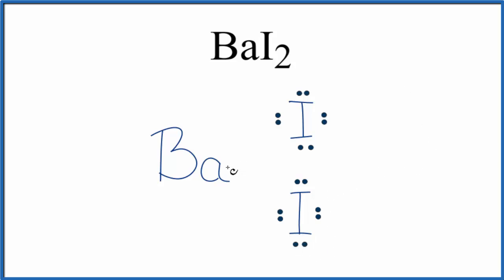Because the barium lost two electrons, it lost negative charges, so it'll have a two plus ionic charge. Each iodine gained one valence electron, so it'll have a one minus ionic charge.